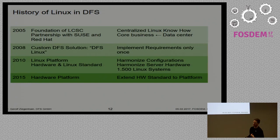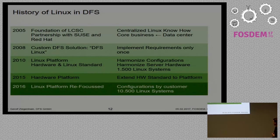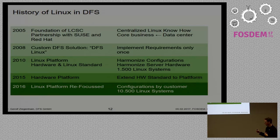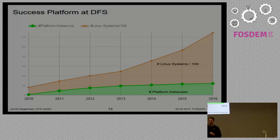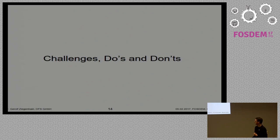In 2010 the idea was extended to a platform with a main goal to harmonize configurations. At that time we had roughly 1,500 systems in our core business running on Linux, and it was already foreseeable that the amount would increase tremendously. We set on Puppet and enabled users to write their own configurations. We also created a hardware standard to ensure these systems could run on Linux. In 2015, the number of systems, complexity, and cost pressure increased, forcing us to think in different ways and extend our hardware standards to a hardware platform. Finally, last year we cracked 10,000 operative systems running under the Linux platform at DFS, all using our modular hardware standards.